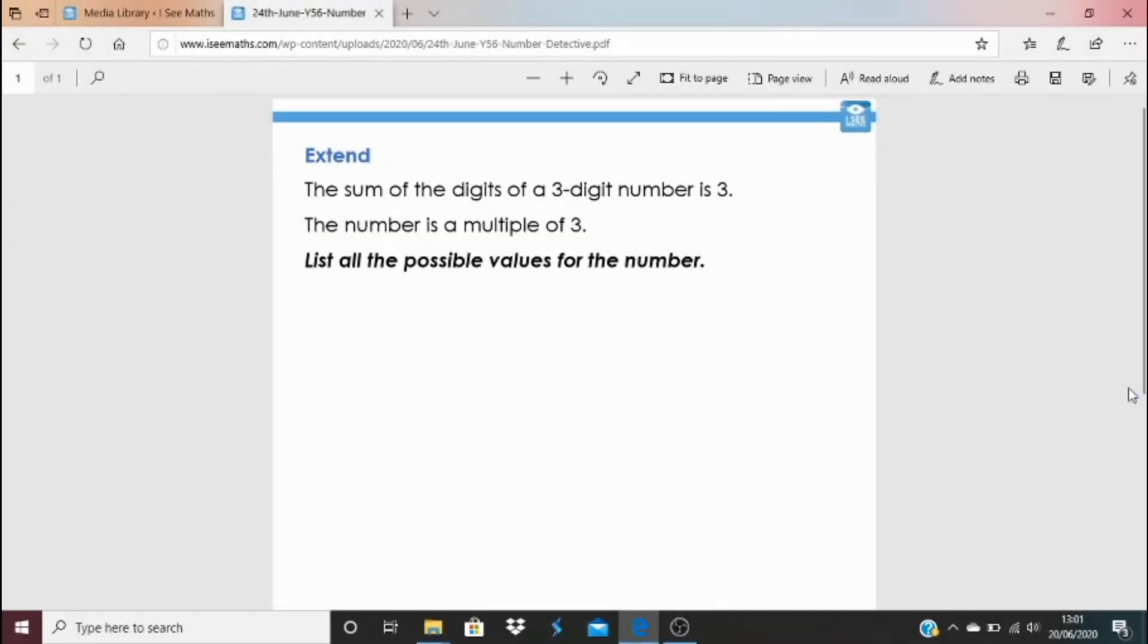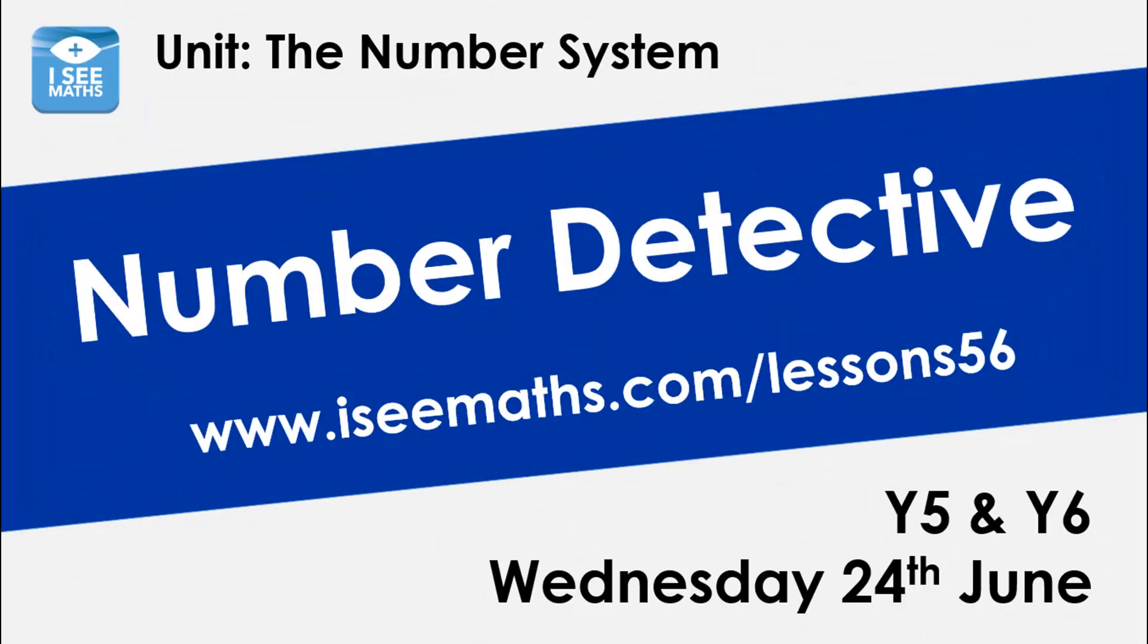So for your Extend task, we've got a development on that main task. I really like this one. The sum of the digits of a three-digit number is 3. Just 3. And the number is a multiple of 3. So list all the possible values for that number. Now, I wonder how many there are. How many you can find. You'll see how many there are at the bottom. And we'll recap on this tomorrow as well. So love that challenge. Enjoy it if you've got that far. And I'm going to see you back tomorrow. Thank you.